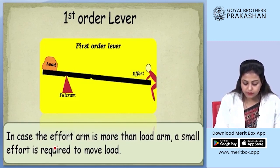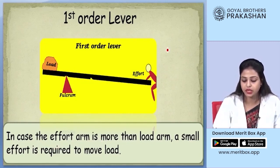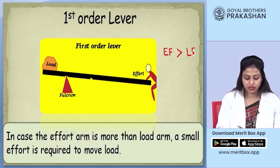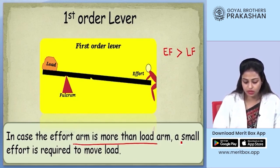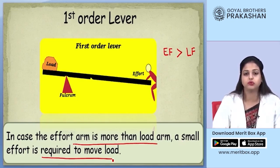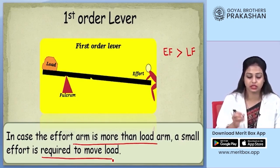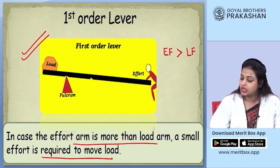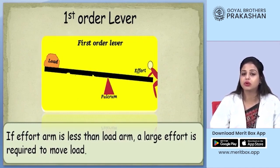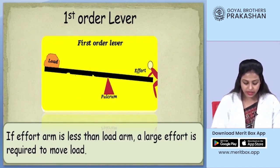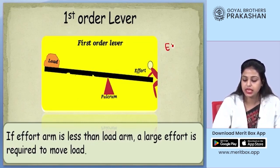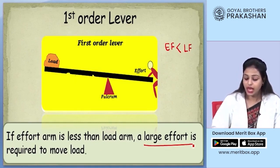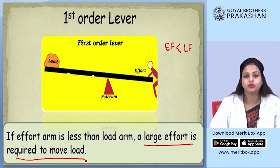In the case when the effort arm is more than the load arm, that means EF is greater than LF, a very small effort is required to move a load. On the other hand, when the load arm is greater than the effort arm — that is, EF is less than LF — we have to apply a very large force to move the load.